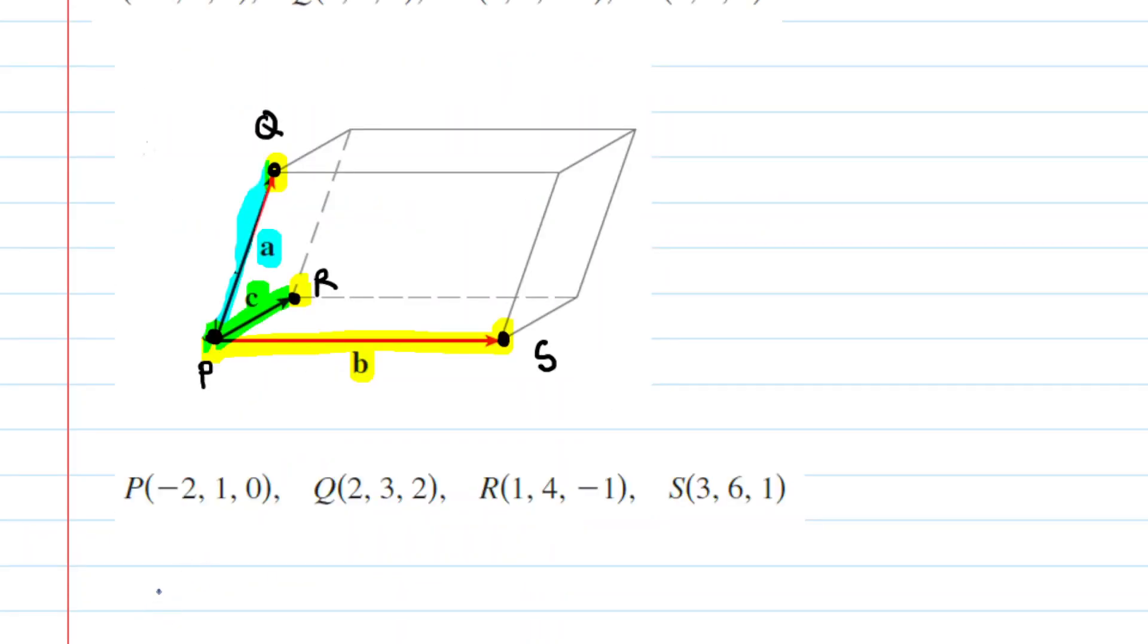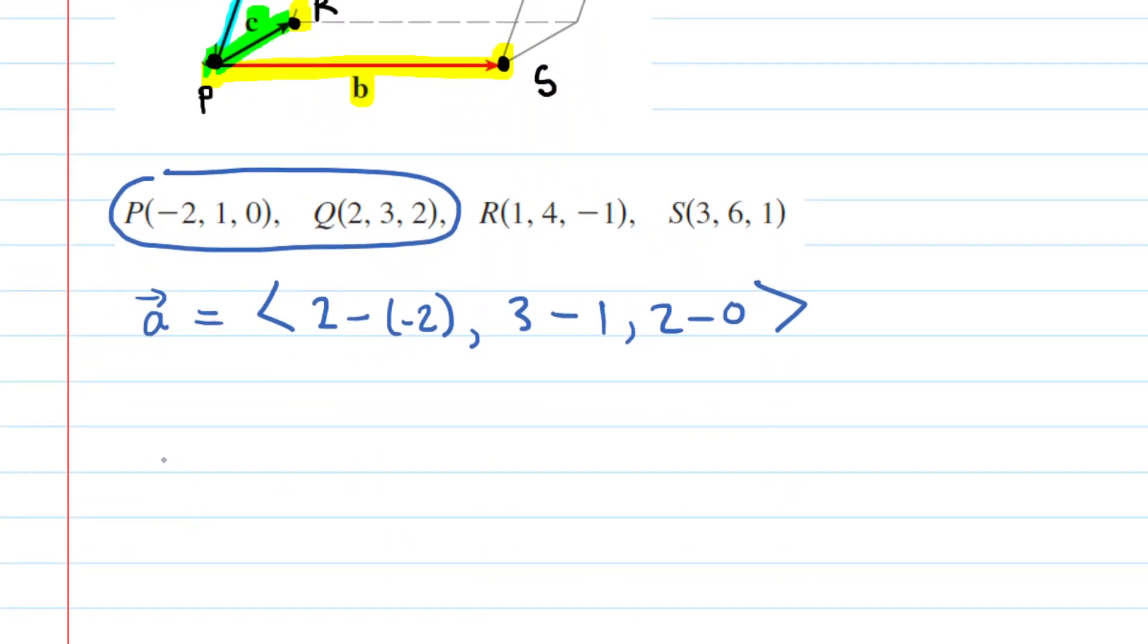So first, we will represent vector A. And again, if you look at the figure, that is formed by joining point P to point Q. So you're looking at these two points right here. And of course, to come up with the vector representation, you take the terminal point, which is Q, and you subtract the initial point, which is P. So, for example, look at Q. You take the x-coordinate, which was 2, and then subtract the x-coordinate of P. We do the same with the y-coordinates, we have 3 minus 1, and then for the z-coordinates, we have 2 minus 0. We close that off, and then we simplify this. And we can see that vector A will equal 4, 2, 2.